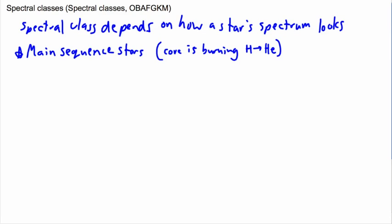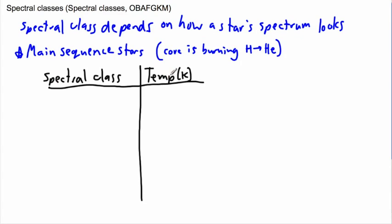Now we can make a list of spectral class and the equivalent temperature. Remember that'll be in Kelvin - this is the surface temperature or the black body temperature. The first spectral class is called O and that has a temperature of 33,000 or larger, so these are the hottest ones.